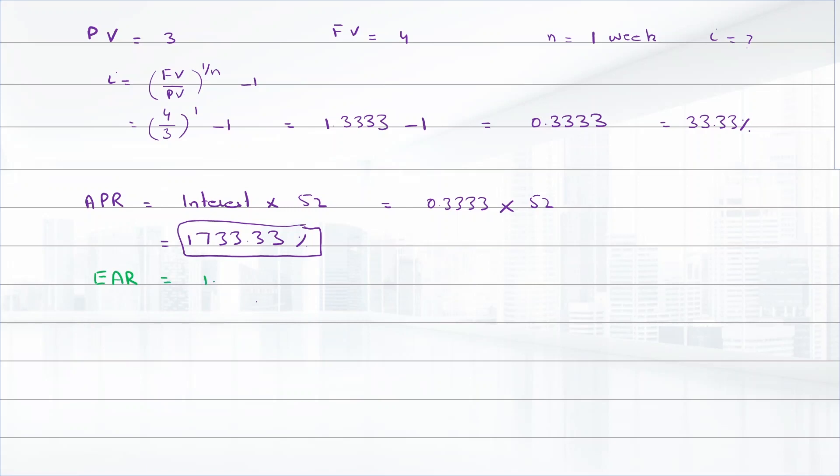EAR is equal to 1 plus APR divided by 52, raised to power 52, minus 1. That is equal to 1 plus 1733.33 percent divided by 52, raised to power 52, minus 1.